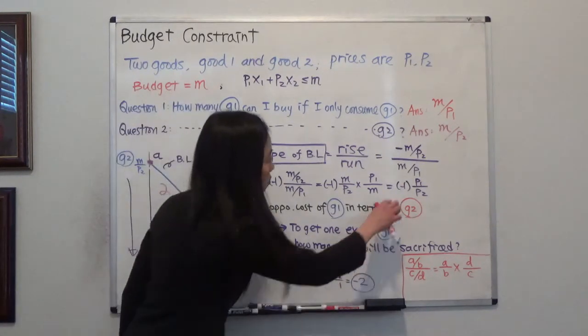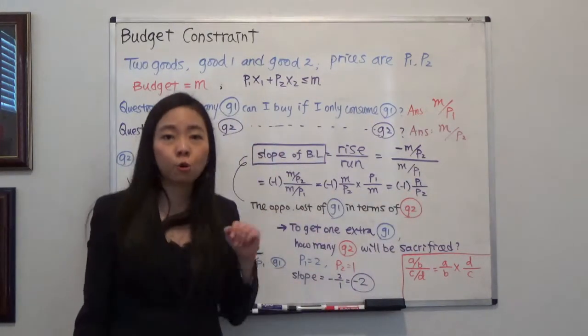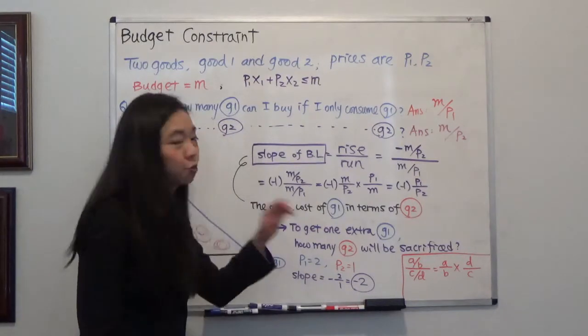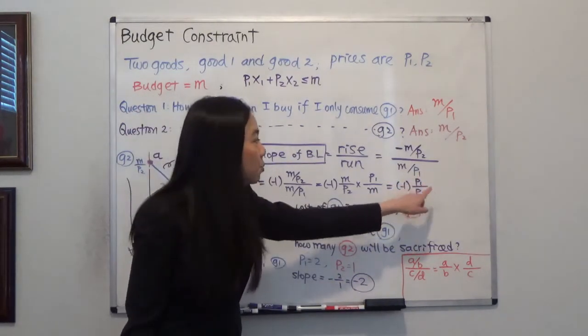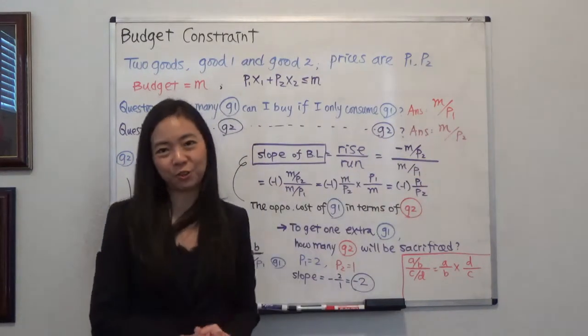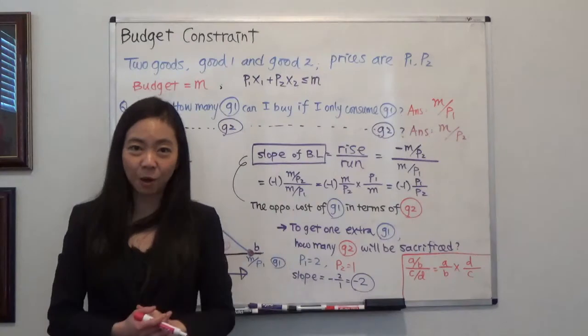The reason why we have a negative sign here is that it means sacrifice. In order to get one unit of good one, I have to sacrifice P1 over P2 units of good two. So this is our budget constraint. I hope this helps. I'll see you next time.